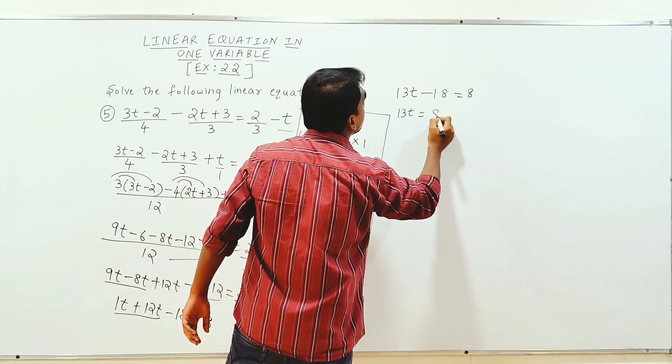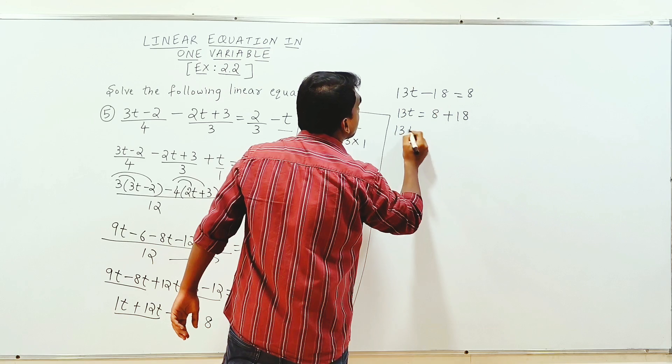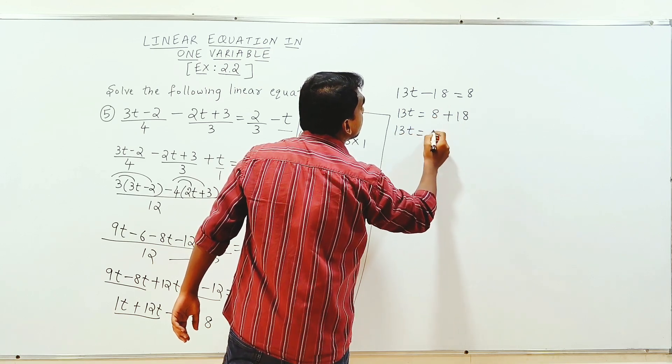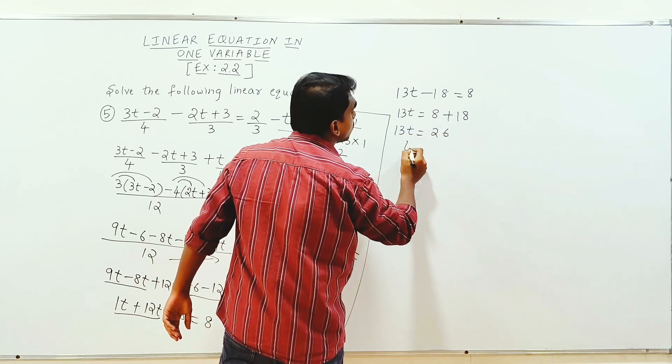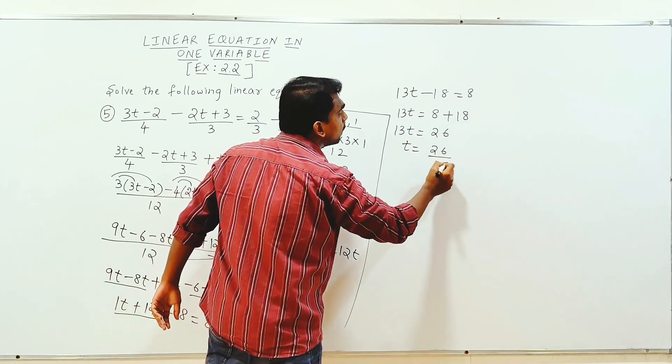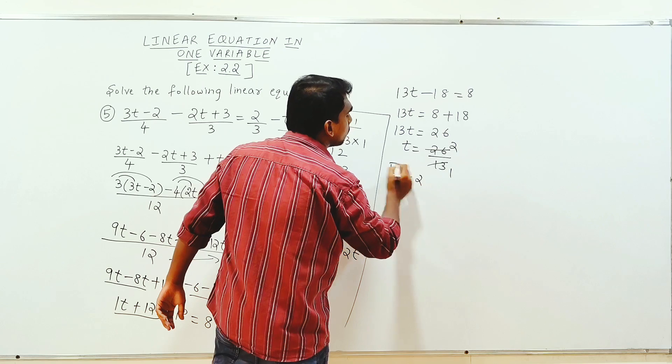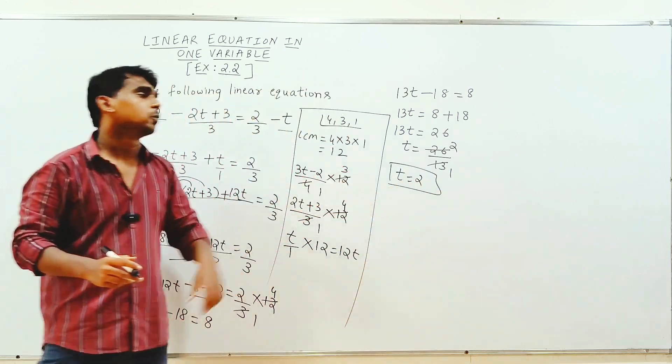13t is equal to 8 plus 18. 13t is equal to 18 plus 8, is equal to 26. So t is equal to 26 divided by 13, 13, 2. t is equal to 2. So t is equal to 2, 3, 6.